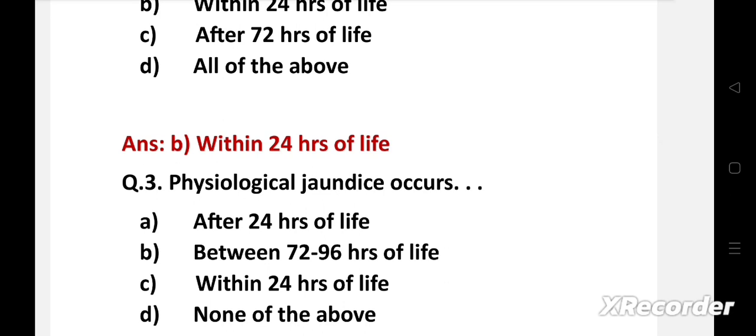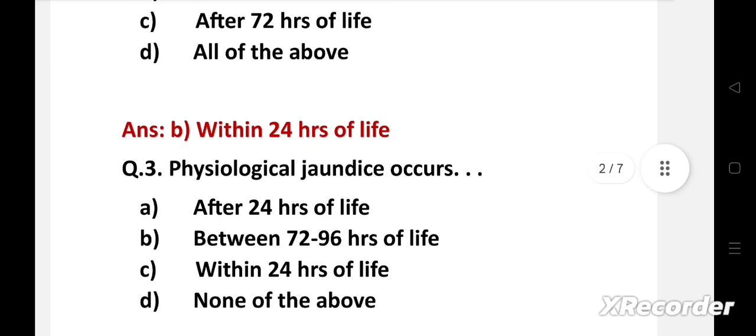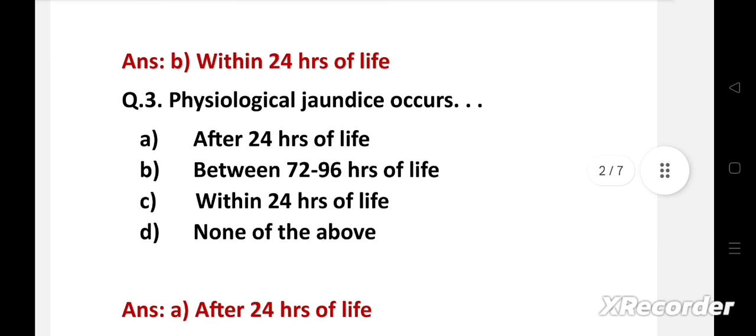Physiological jaundice occurs option A after 24 hours of life, B between 72 to 96 hours of life, C within 24 hours of life, D none of the above. Right answer is option A, after 24 hours of life. Most neonates develop visible jaundice due to elevation of unconjugated bilirubin concentration after 24 hours of life. This common condition is known as physiological jaundice.